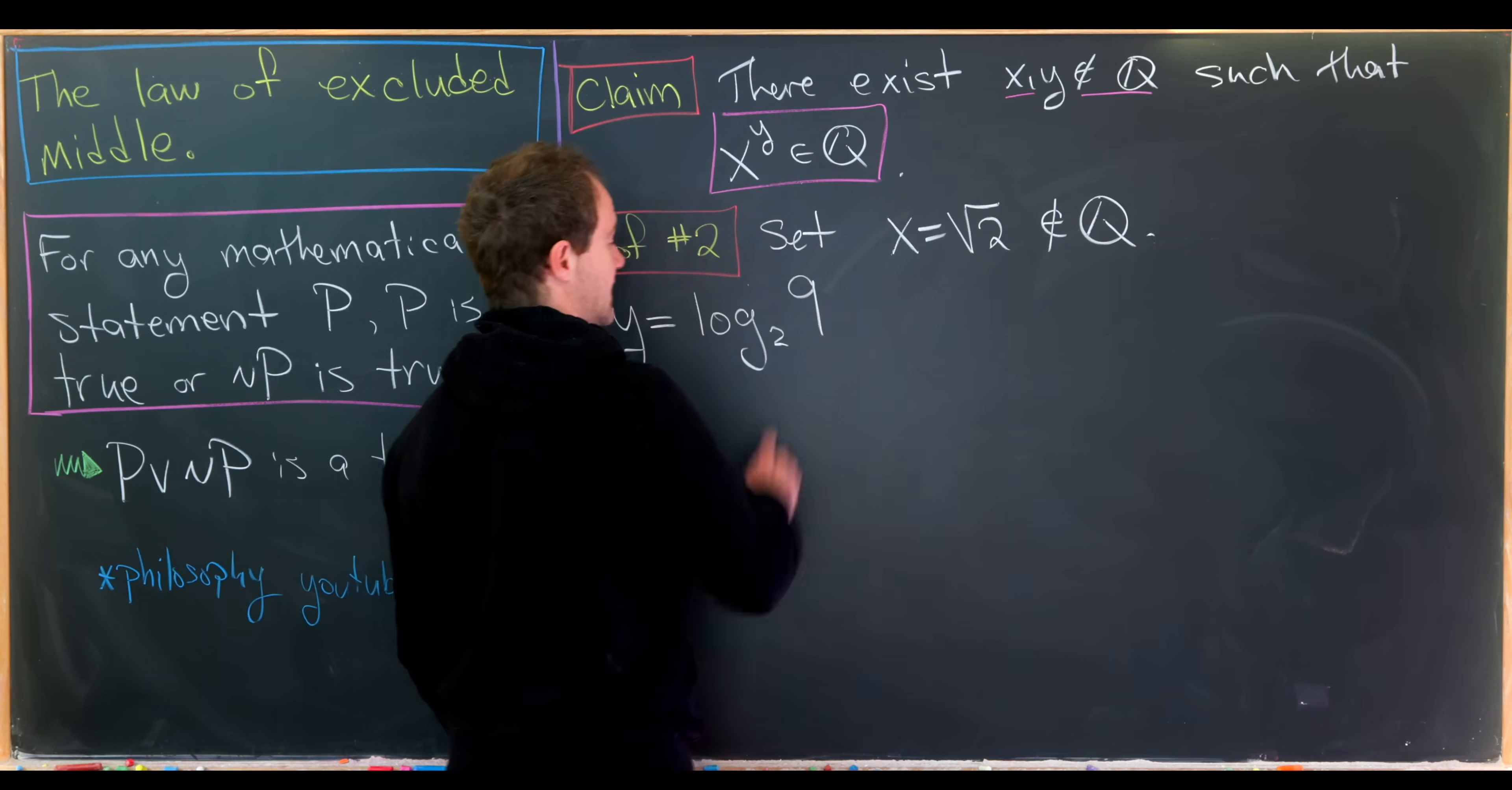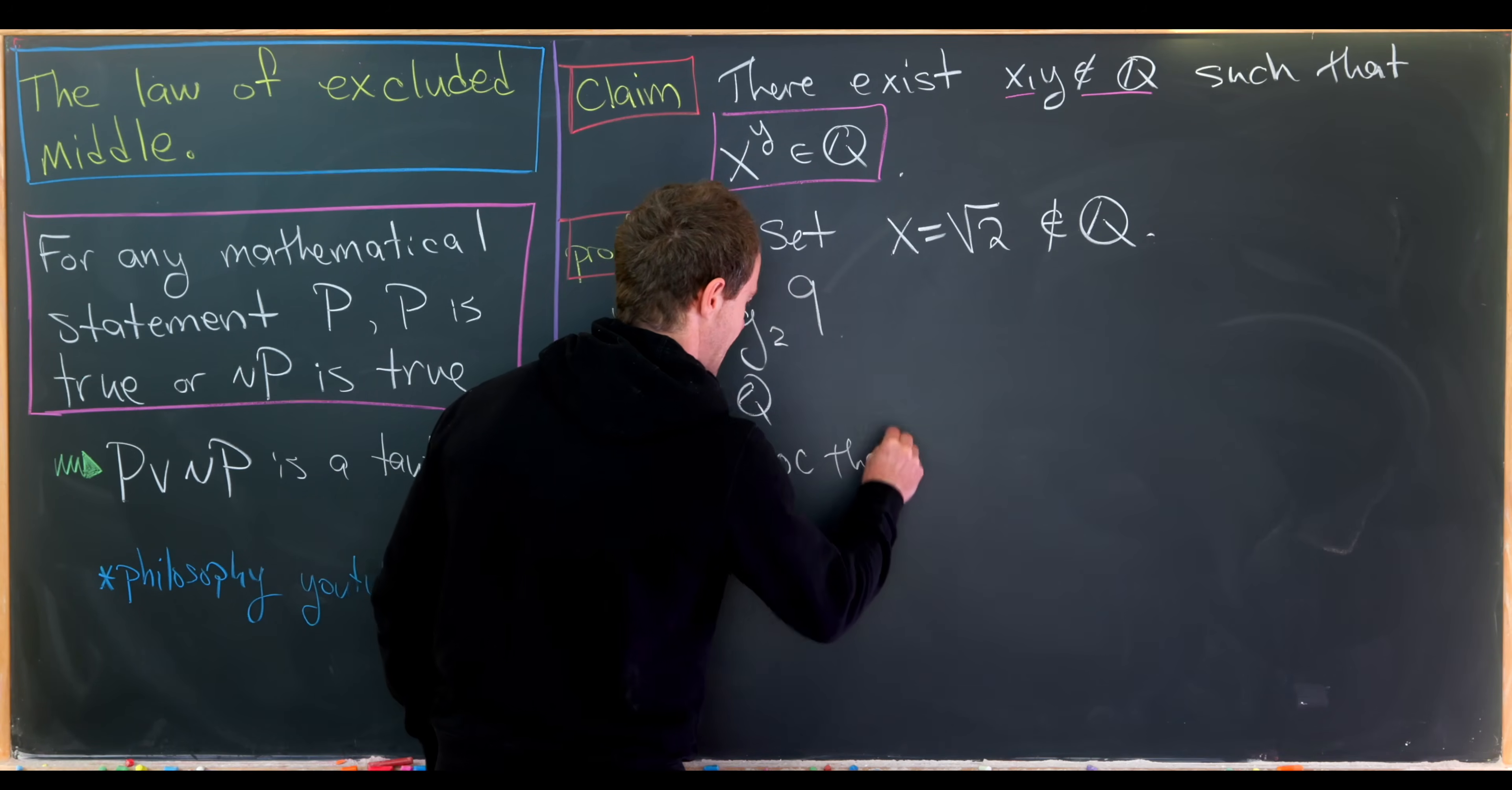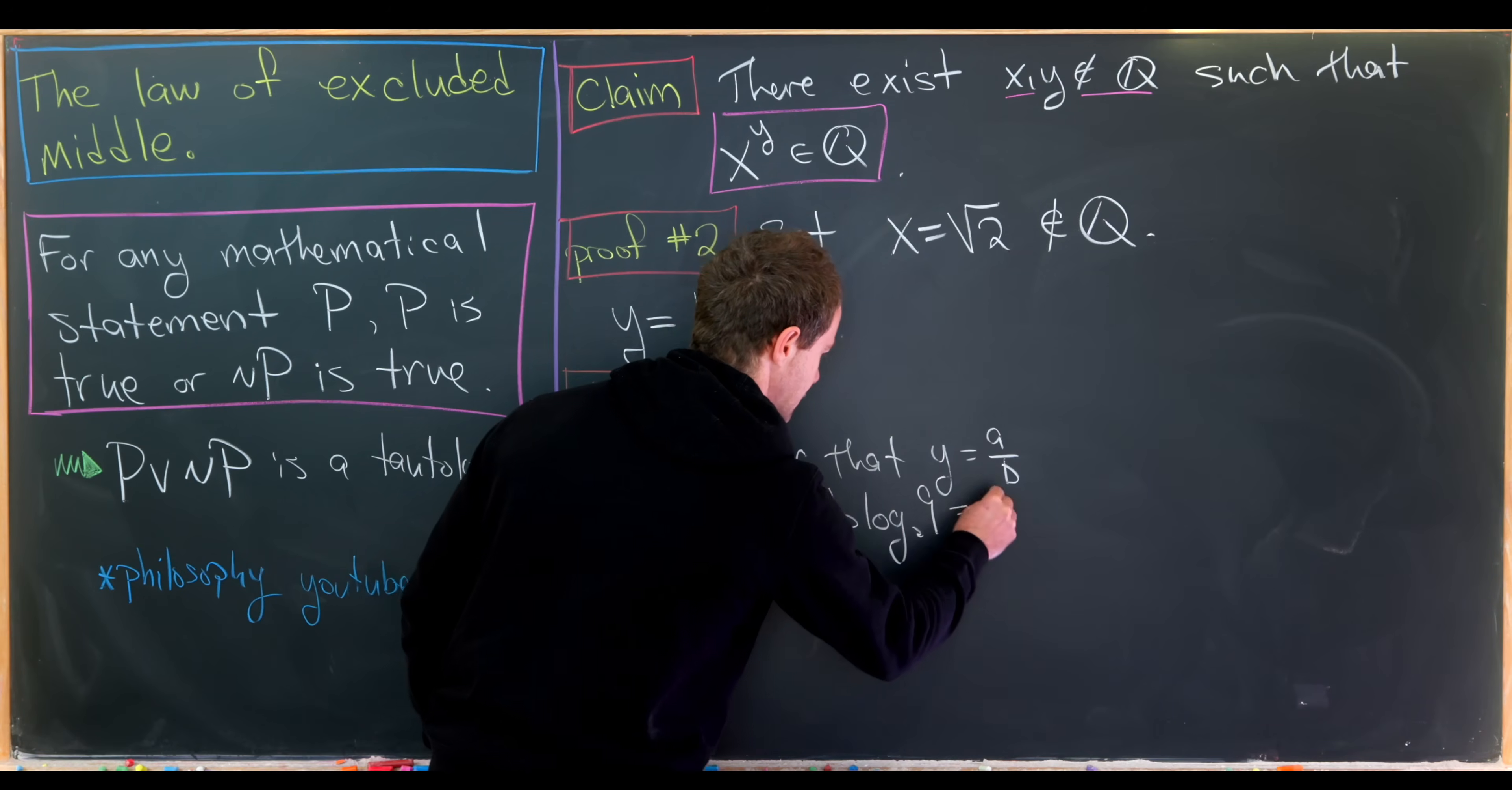And now, like I said, we will fill in this claim, which is that y is irrational. Okay, so let's see the proof of this claim. So we're going to do this by contradiction, which is the typical way to show that numbers are irrational. So let's suppose by way of contradiction that y is a rational number. So that means it can be written as a over b, where a and b are integers. So that means we have log base 2 of 9 equals a over b. But now let's multiply both sides of this equation by b. So that will give us b times log base 2 of 9 equals a.